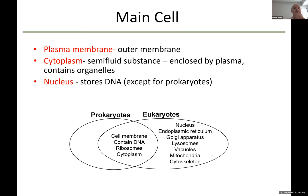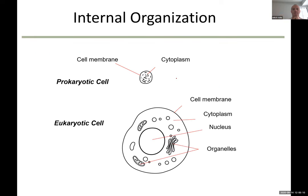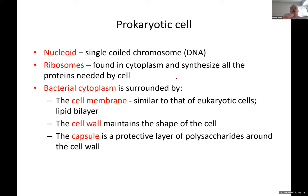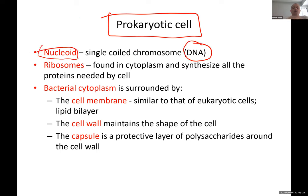A cell is made up of three main parts: plasma membrane, cytoplasm, and nucleus. Prokaryotes do not have a nucleus. In prokaryotic cells, the region where DNA is found is called the nucleoid. Prokaryotic cells also have a cell membrane, which is the outermost part of the cell.